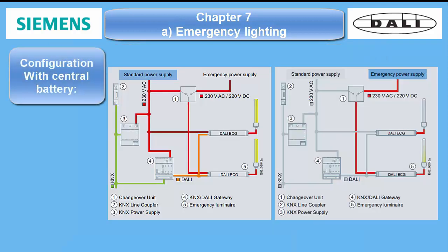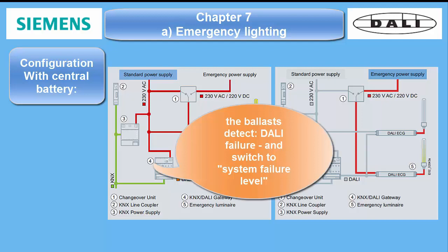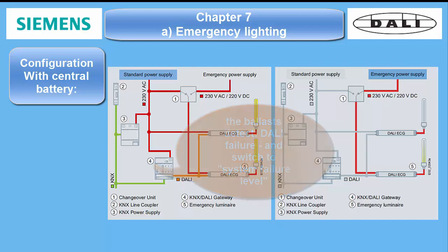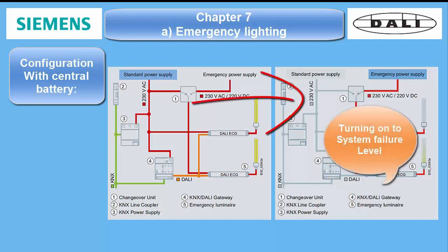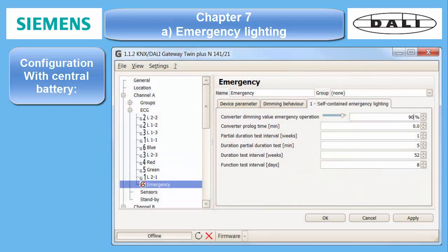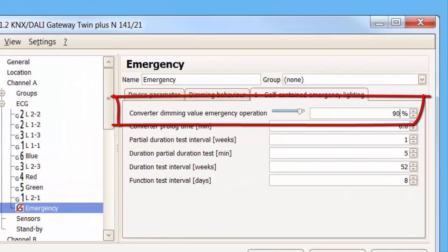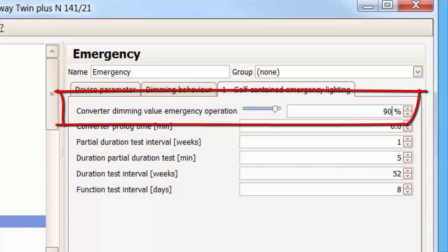2. Configuration with central battery operation. All DALI ECG support the safety lighting option in general. That means if the control line, i.e. the DALI bus, doesn't operate anymore — which usually happens when the main supply for the DALI gateway fails — the ECG will switch into the so-called system failure level, if it is still under power from the safety power supply. The system integrator simply needs to set the required light level parameter in the ECG's options.